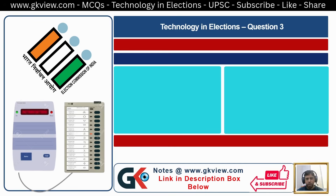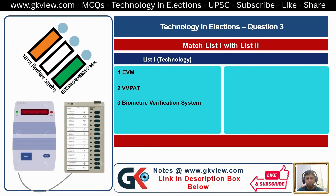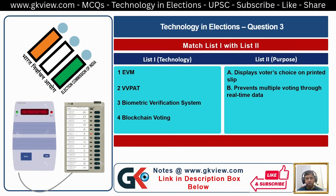Question Number 3. Match List 1 with List 2. List 1 — Technology: 1. EVM, 2. VVPAT, 3. Biometric verification system, 4. Blockchain voting. List 2 — Purpose: A. Displays voter's choice on printed slips, B. Prevents multiple voting through real-time data, C. Ensures quick and accurate vote recording, D. Provides secure digital voter registration.